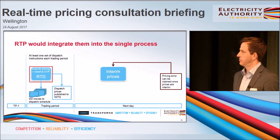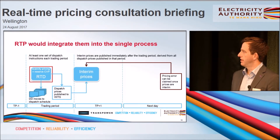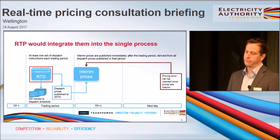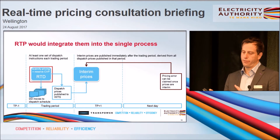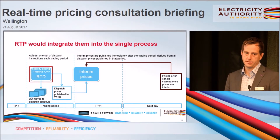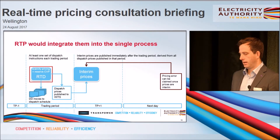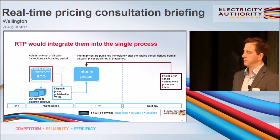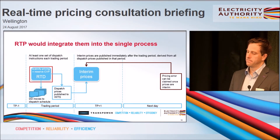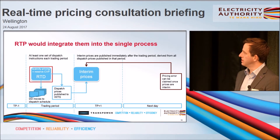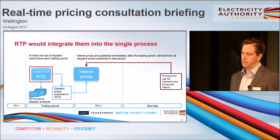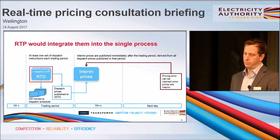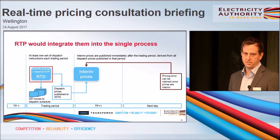No more separate pricing process the next day. Instead, RTD creates dispatch prices, published to WITS, taking effect when seen on WITS as part of issuing new dispatch instructions. Interim prices are then not a separate process — just a simple averaging function to derive a price for the 30-minute trading period from all dispatch prices published in that period. That interim price should be known essentially immediately. If we retain a pricing error claim as a manual process, it will look the same as today: you have essentially a day to claim, and if nobody does, interim prices become final the next day.